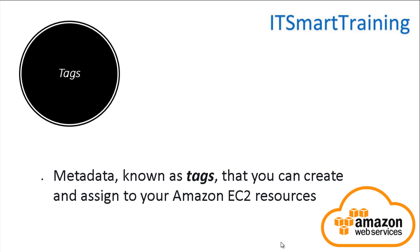Next is Tags — metadata that you can create and assign to your Amazon EC2 resources. When you create an Amazon EC2 resource, you can create a tag, but it is not a mandatory field — it is optional. You may create tags or you may not. It is just an identification of that VM indicating the purpose for which you are using that particular VM. It is just metadata.